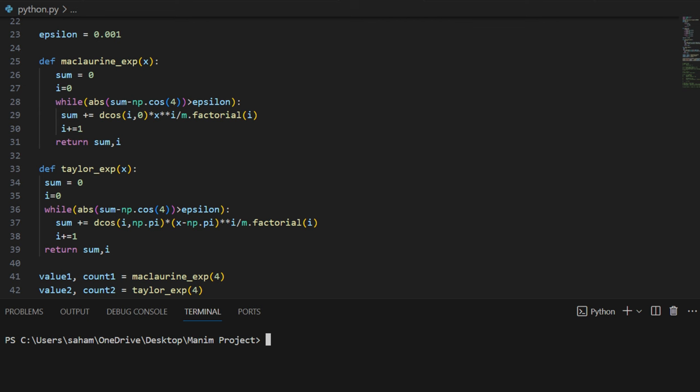The other function, Maclaurin_exp, approximates the cosine function centered at 0. As you can see, the parameter a is being substituted by 0 in the dcos function within it. Similarly, another function, Taylor_exp, evaluates the approximation centered around pi.